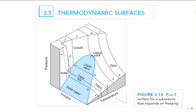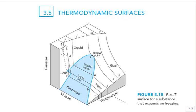We talked last time about the phase change transition and the PT diagram — the pressure-temperature diagram and the vapor pressure curve. In general, you can describe a surface: a thermodynamic surface. It's hard to sketch, but this is for a substance that expands on freezing, just like water. At a particular temperature and pressure, you could be right at a point on line K.